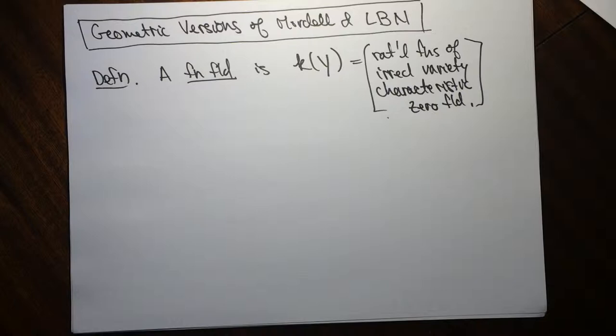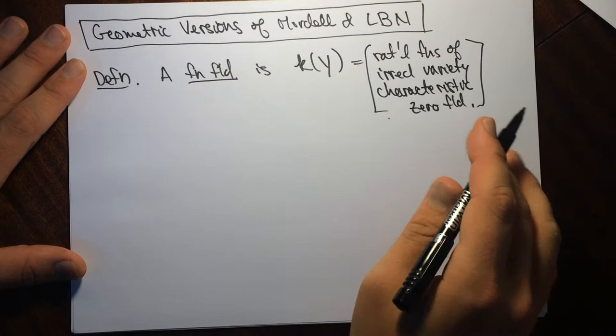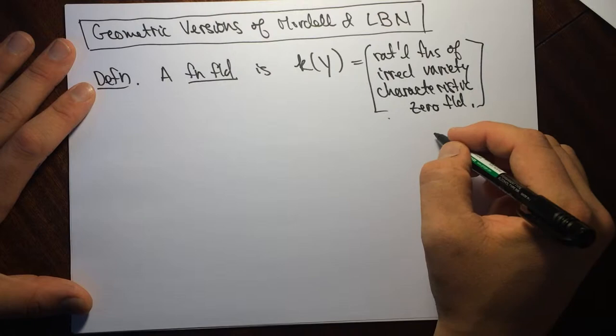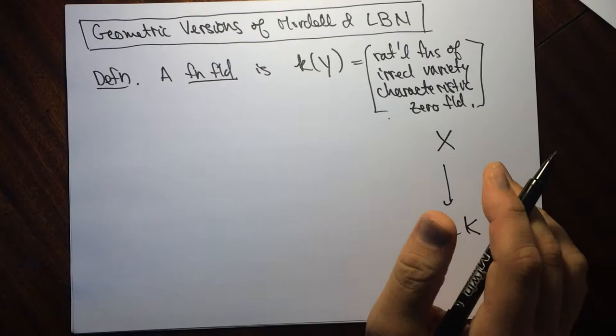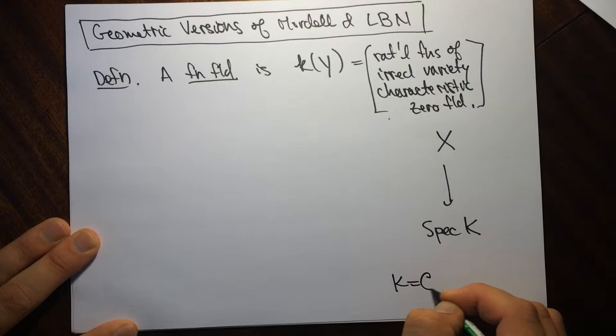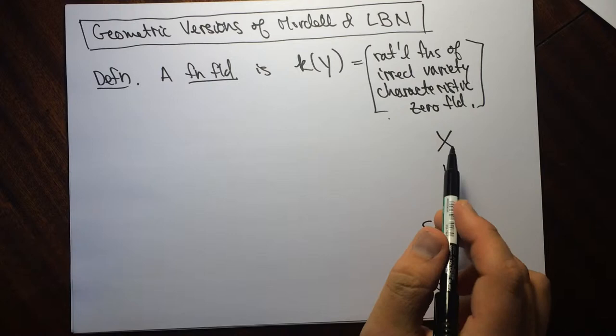So what we're going to do is let K be a function field, and we can look at a variety X over Spec K. This is just a variety with equations defined over K. The thing to think about is K equals the complex numbers adjoined a single variable T, and when we look at these equations, we can spread them out — the parameter T can actually be thought of as varying.